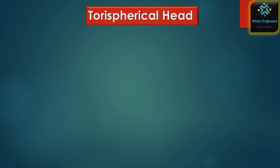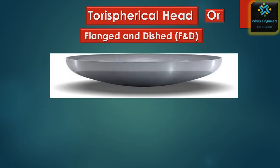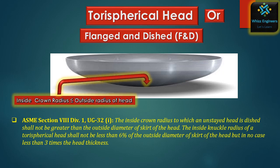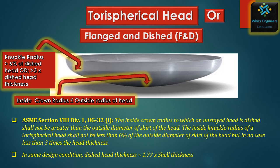The next type is the tori-spherical head, also called a flanged and dished head. These heads are used where the pressure is moderate and the overall height of the pressure vessel is important. They have a fixed crown radius, and the transition between the straight face and the crown radius is called the knuckle radius. As per ASME Section 8 Division 1 UG-32Y, the crown radius shall be less than or equal to the outside diameter of the head, and the knuckle radius shall be more than 6% of the outside diameter of the head and in no case less than 3 times the thickness of the head. The thickness is approximately 1.77 times the shell thickness.